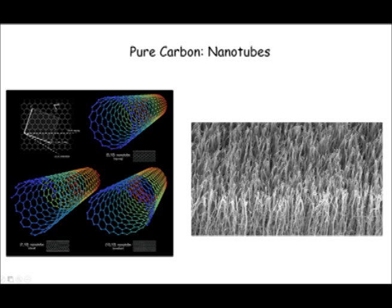Carbon nanotubes were discovered in 1991. It's a hollow cylinder — you can see in the picture it looks almost like carpet or grass, but those are actually carbon nanotubes. This is taken with a special microscope that can look at very small things. At the nanometer scale we can see what these actually look like. They're flexible, extremely strong, and good conductors of heat and electricity. They could be used both here and in space exploration — this is literally the material of the future.